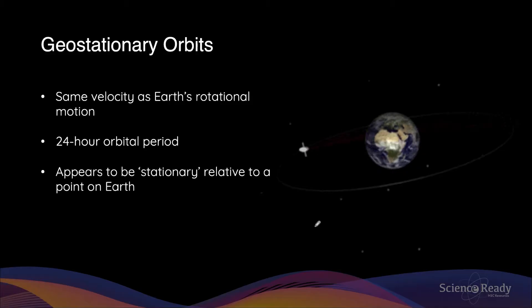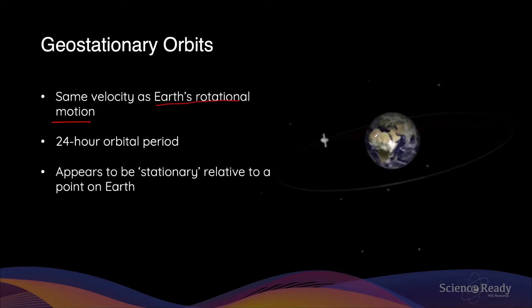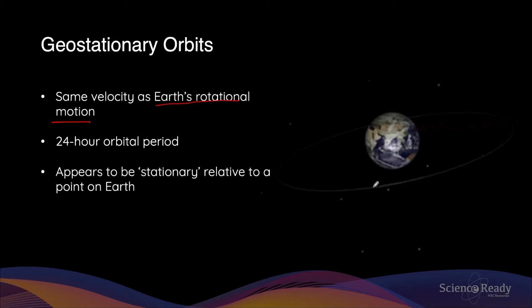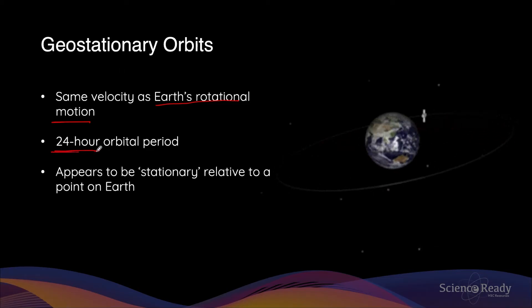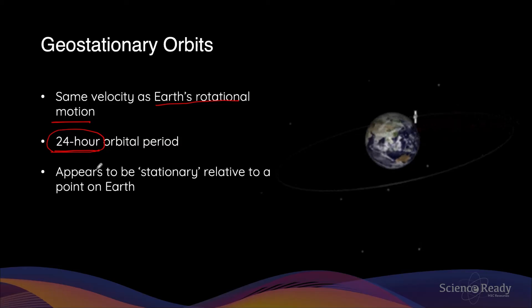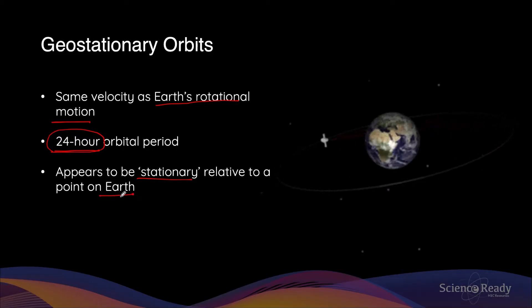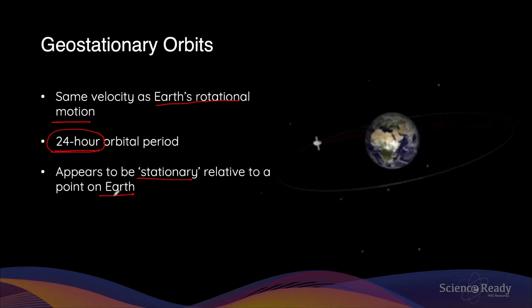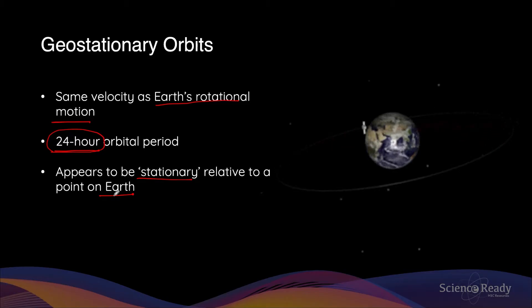We'll start with geostationary orbits. Geostationary orbits have the same velocity as Earth's rotational motion. You can see that as Earth rotates, the satellite in the geostationary orbit is orbiting Earth at exactly the same orbital velocity. This means the orbital period for a geostationary orbit is exactly 24 hours, which is identical to the number of hours in a day. Due to the same velocity and the same orbital period, geostationary satellites appear to be stationary relative to a point on the Earth. So if you look up to the sky and can see a geostationary satellite throughout the day, its position will not change, as you and the satellite are both travelling at exactly the same orbital velocity.